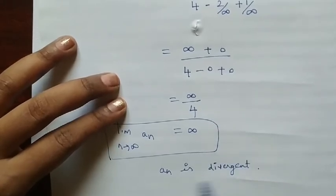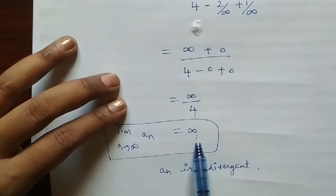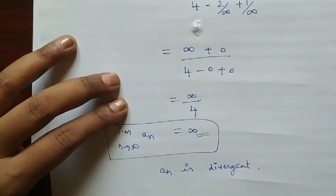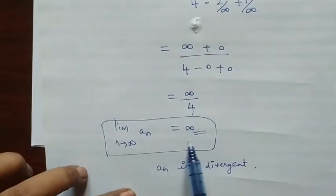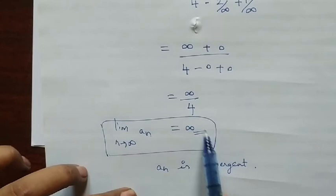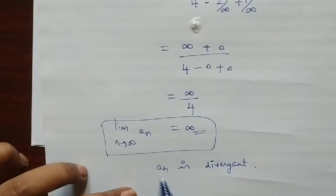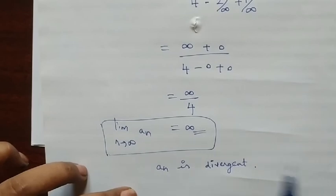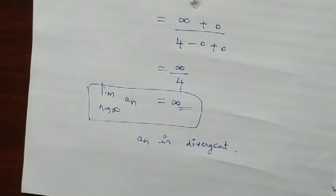Since it is divergent to the limit infinity — since the limit value is not finite — we can say that the Nth term and the sequence is divergent. Thanks for watching.